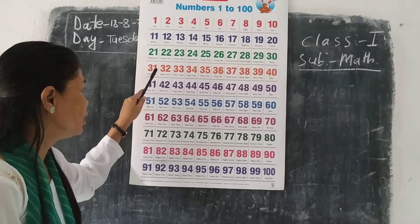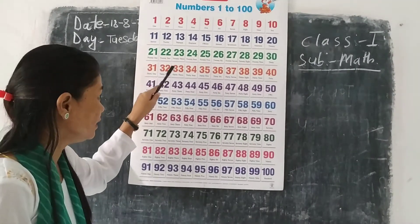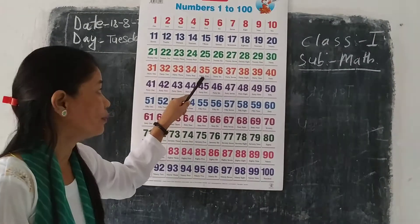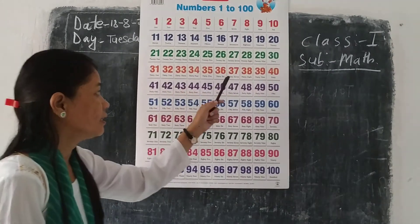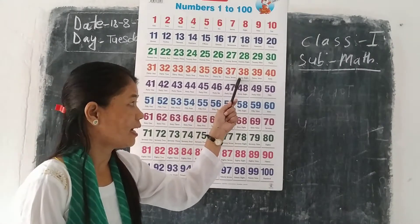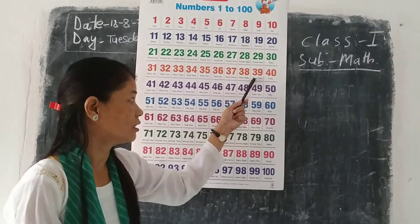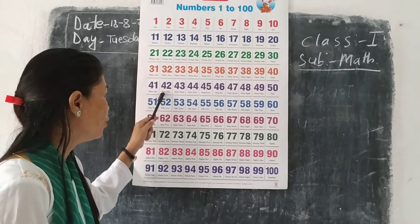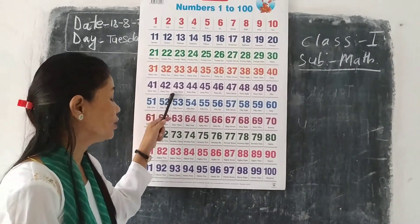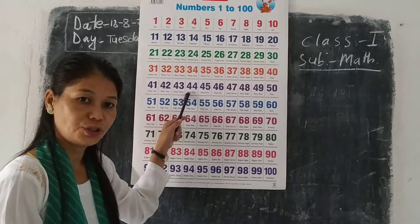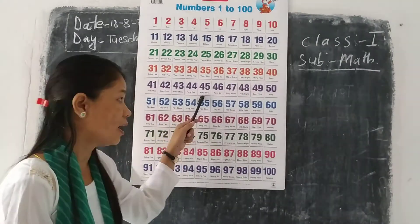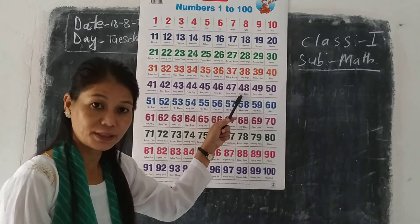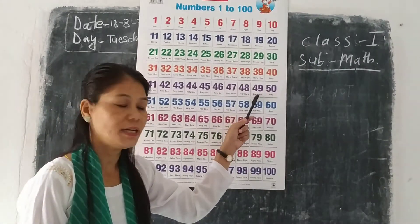31, 32, 33, 34, 35, 36, 37, 38, 39, 40, 41, 42, 43, 44, 45, 46, 47, 48, 49.